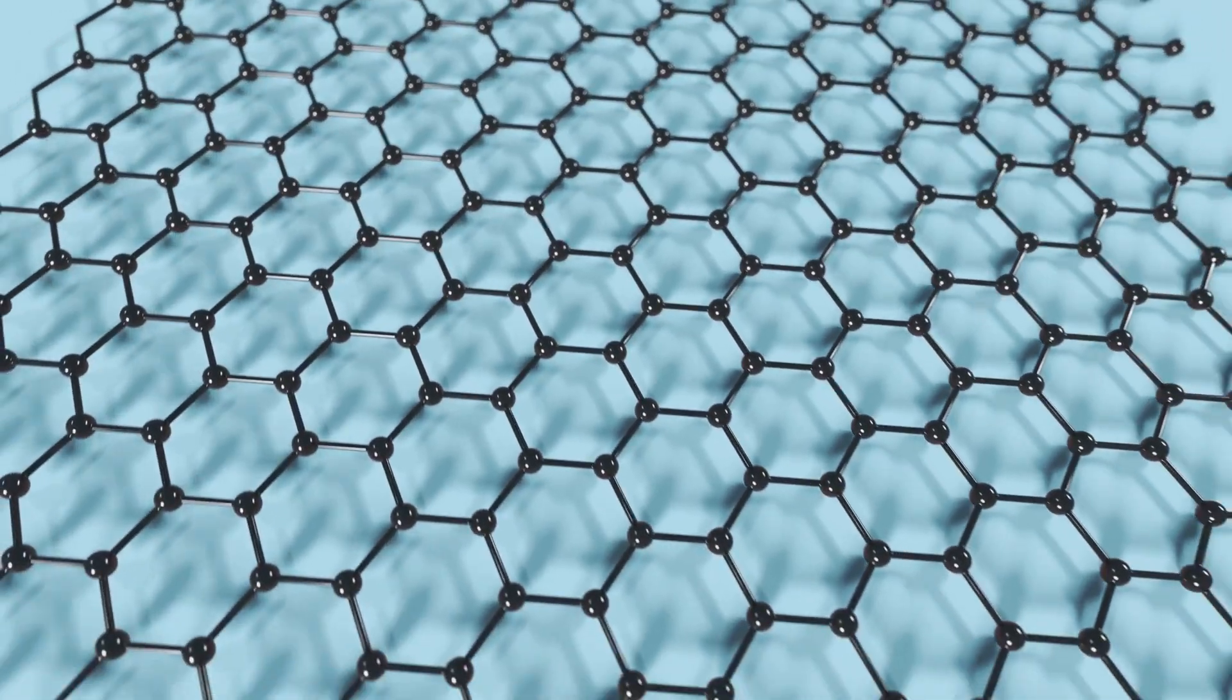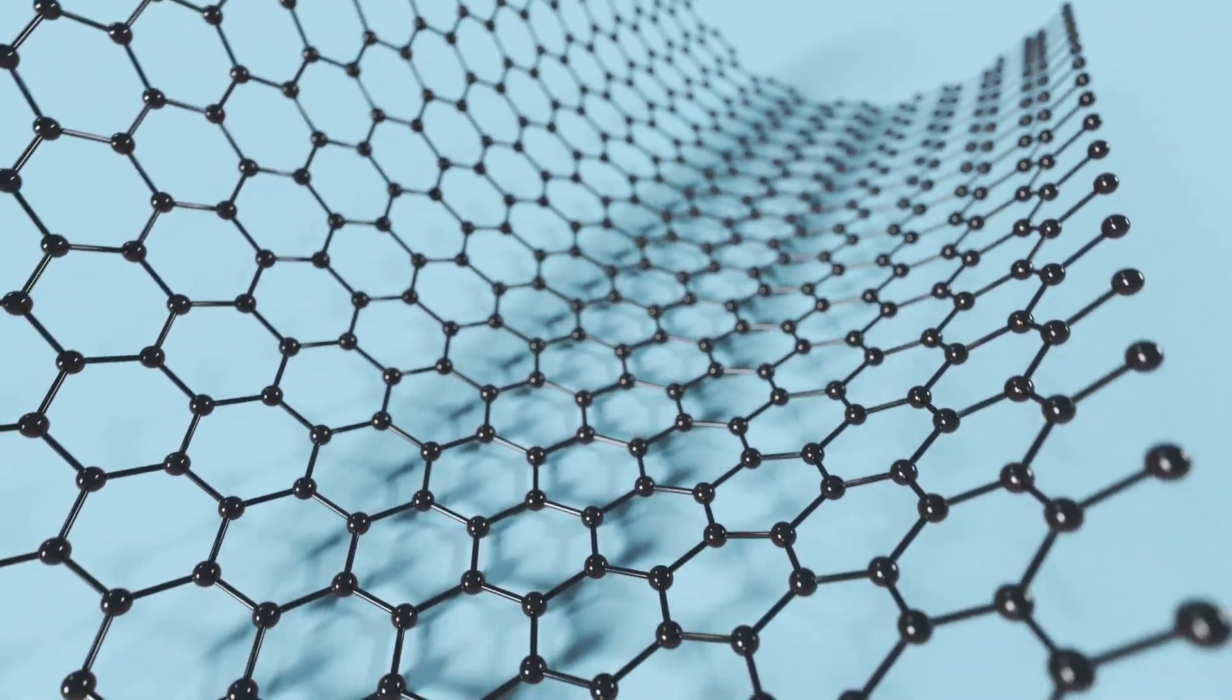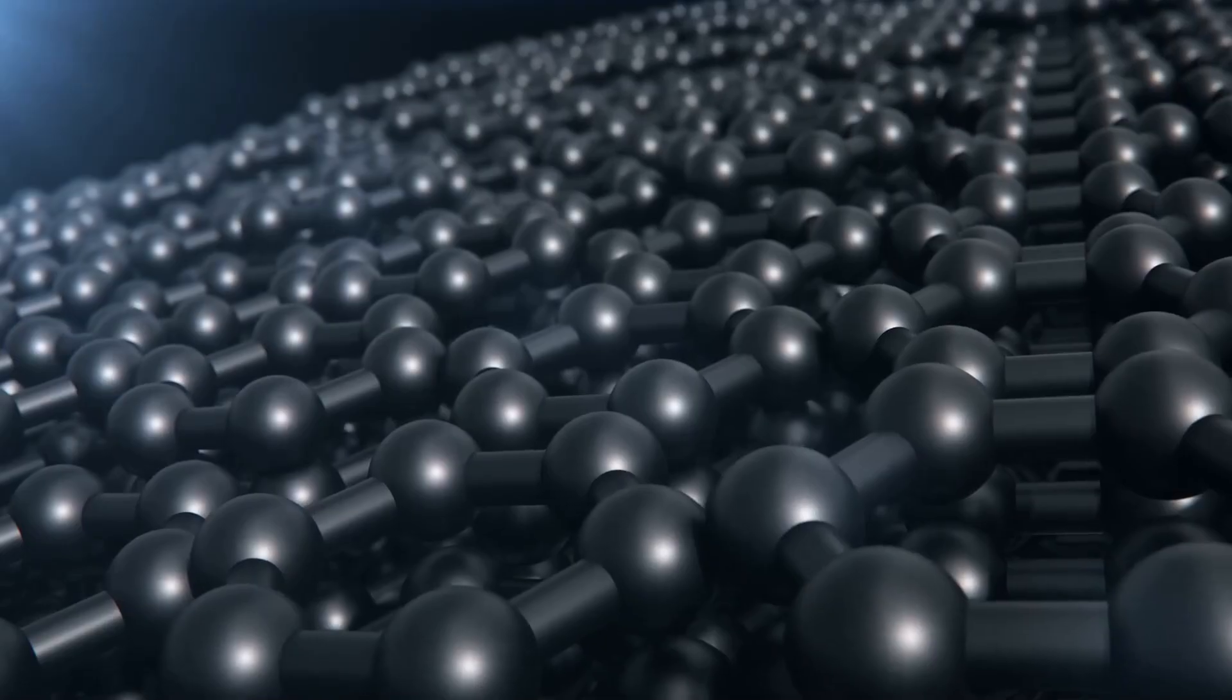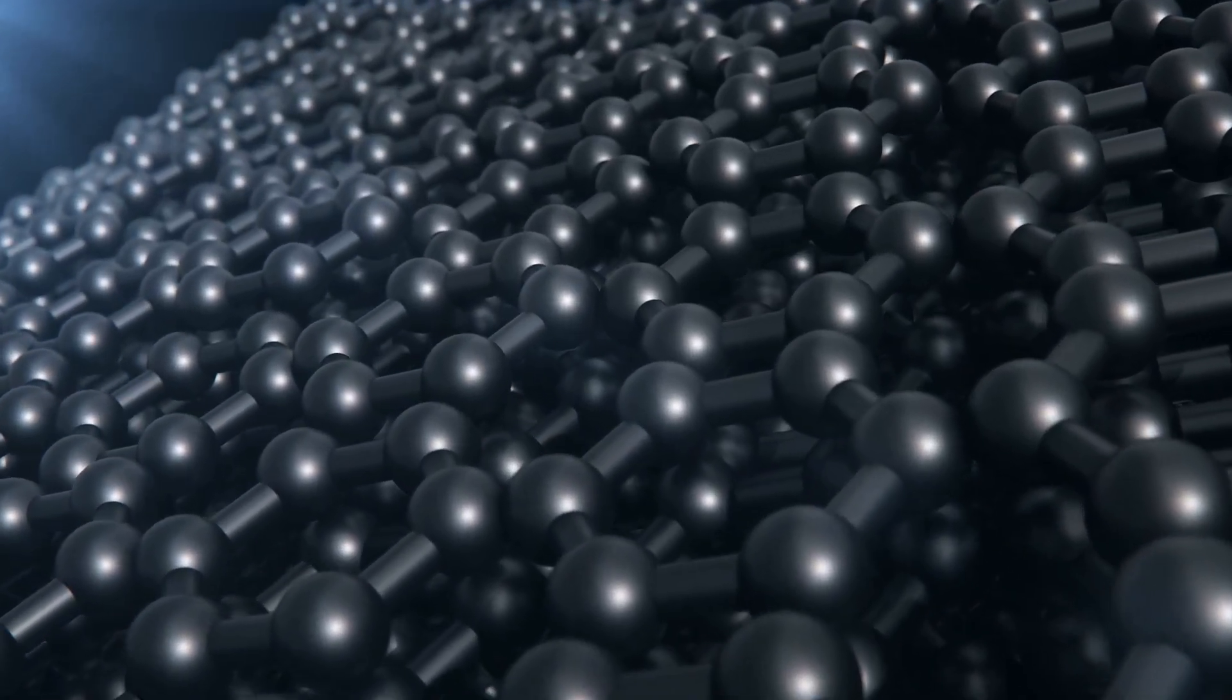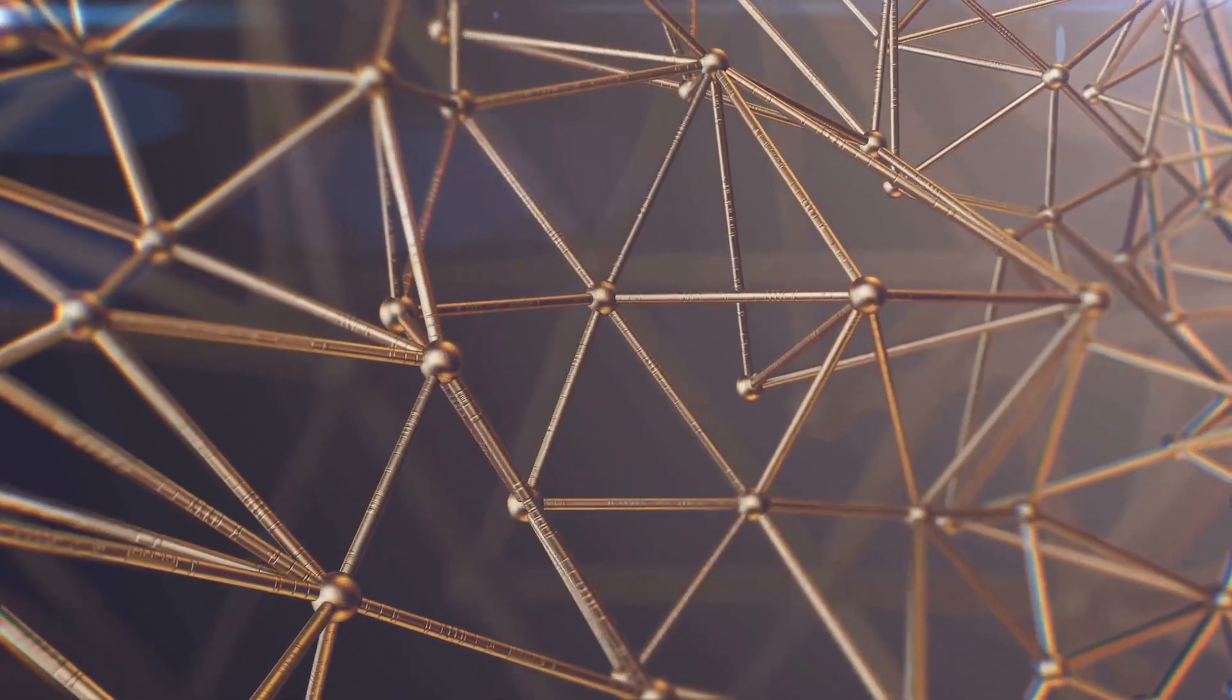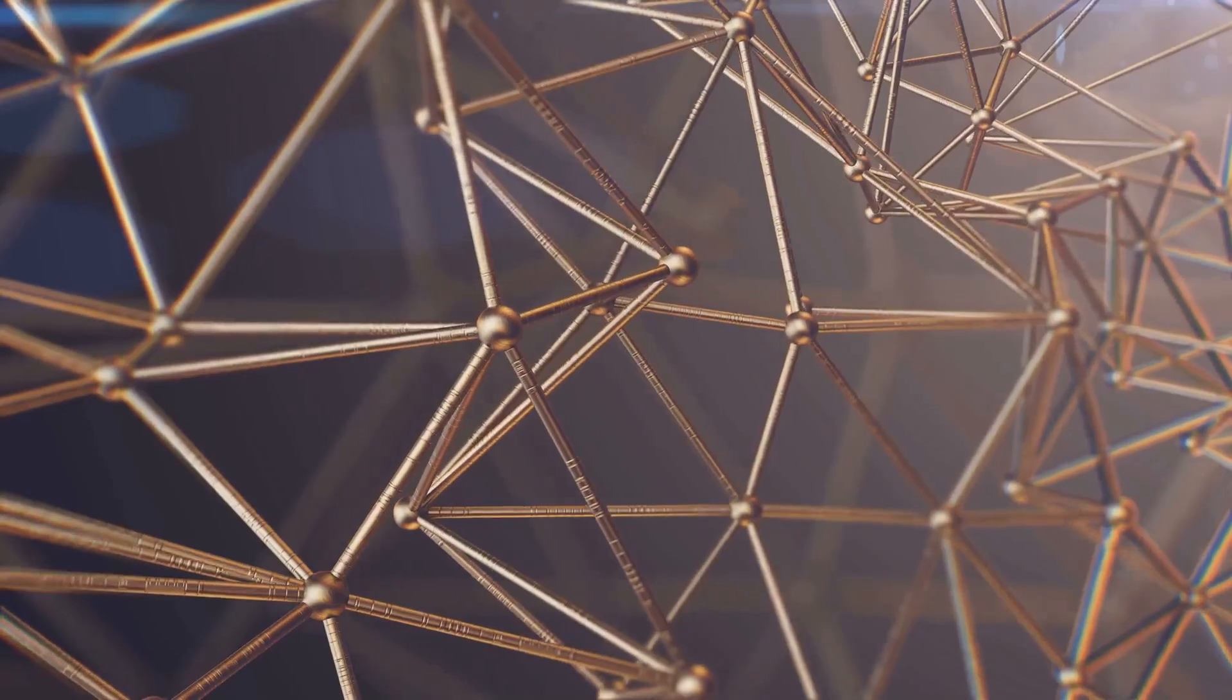Among these wonder materials, graphene stands out. Discovered in 2004, graphene is a single layer of carbon atoms arranged in a hexagonal lattice. Despite its simplicity, it has a range of properties that make it incredibly versatile and valuable. This structure gives graphene its remarkable strength and flexibility.